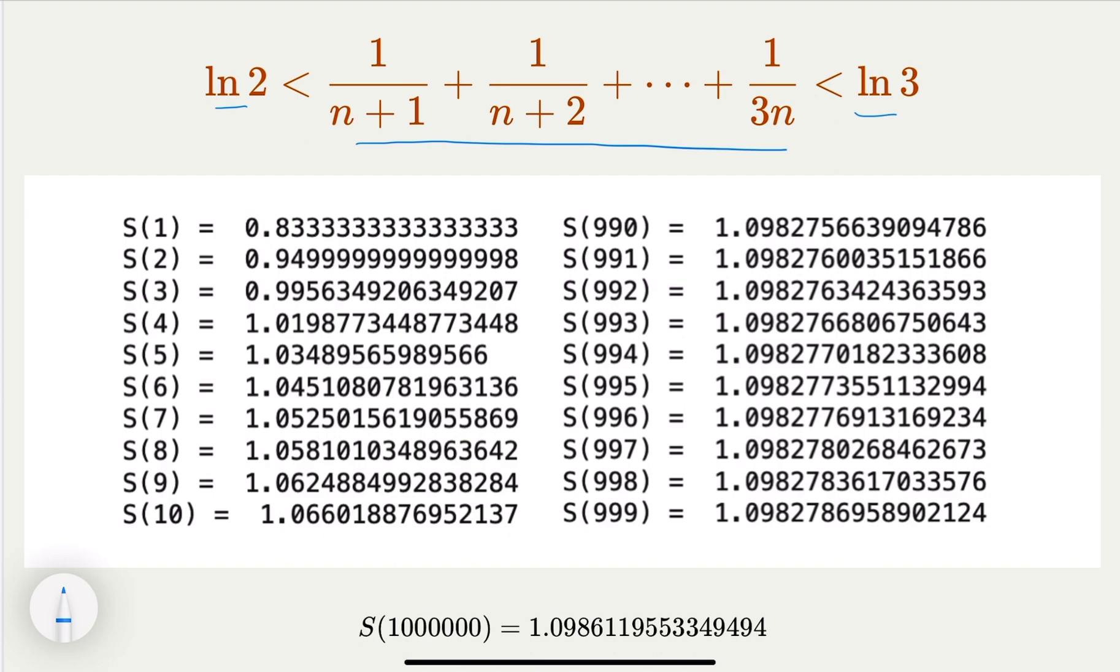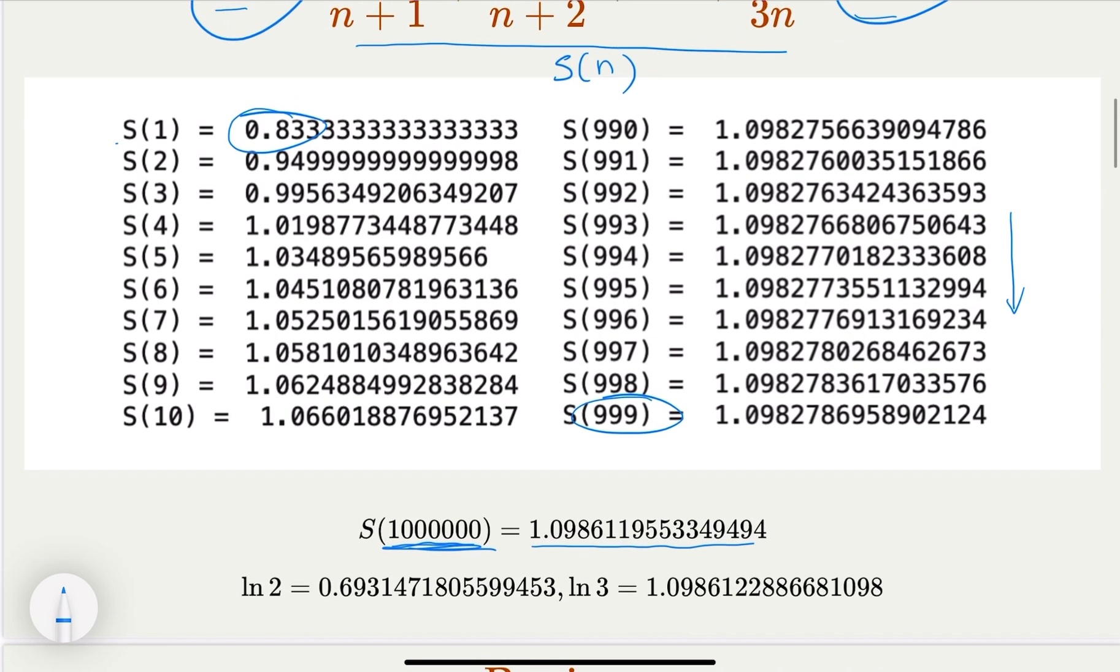So we're saying that this summation here is in between log 2 and log 3. Let's try it out. So I wrote a computer program to calculate. Let's call this S sub n here. So S sub 1 is 0.8, and S sub 99 here is getting bigger and bigger as n gets bigger. We notice that log 2 is indeed smaller than the smallest. Log 3 is bigger than the biggest so far. And of course, when n goes to infinity, we may have convergence to log 3.